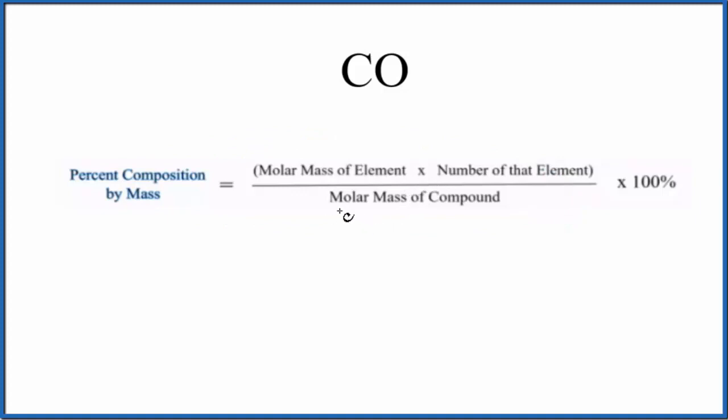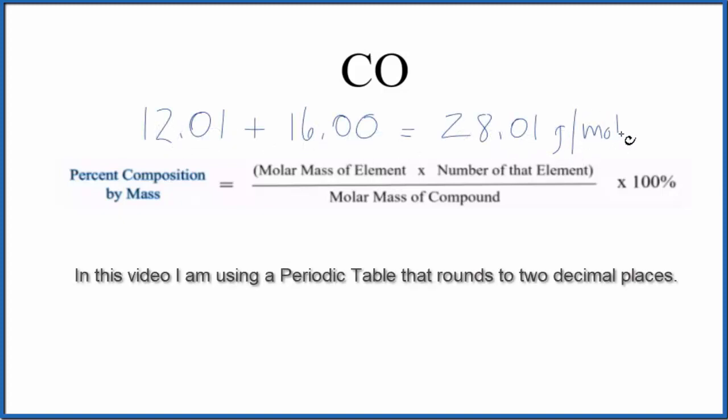and the first thing we want to find out is the molar mass for the entire compound, the carbon monoxide here. When we do that we get 28.01, and the units are grams per mole. So we have the molar mass for the compound, now let's work with each element.